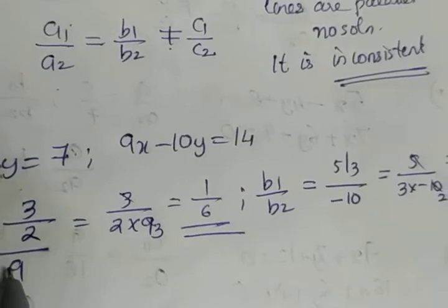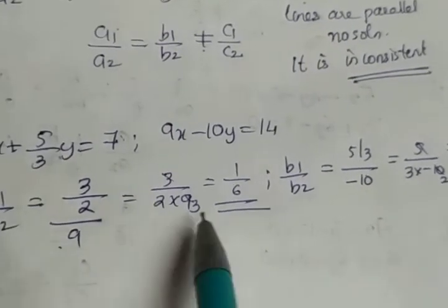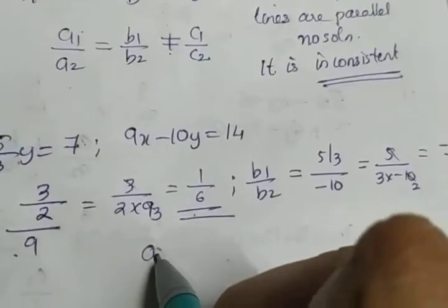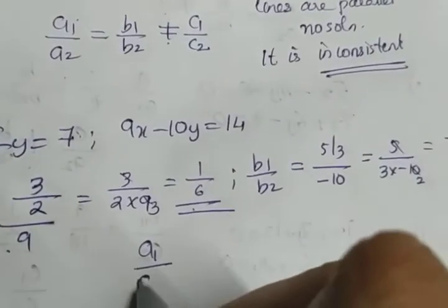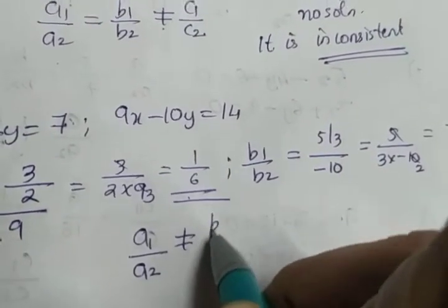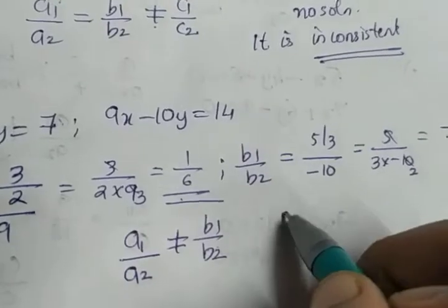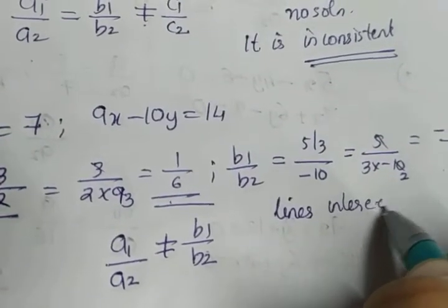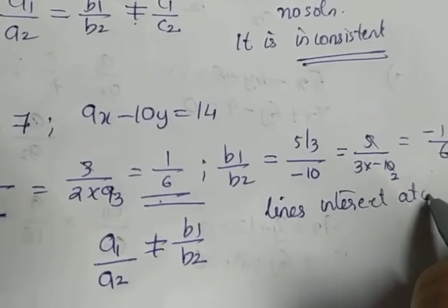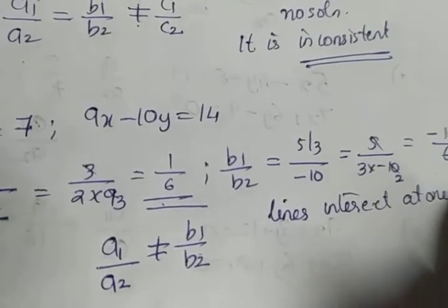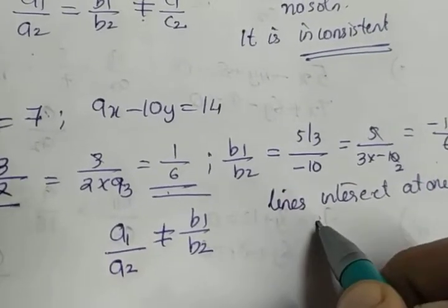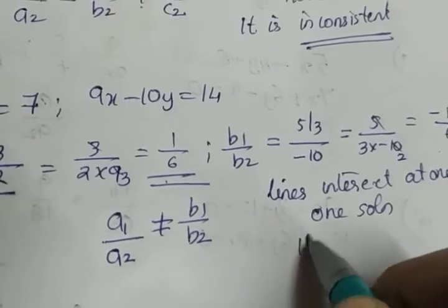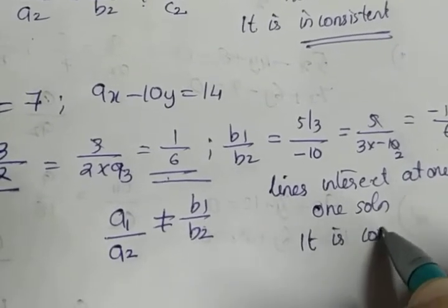So a1 by a2 is 1 by 6 and b1 by b2 is minus 1 by 6. What we can conclude is a1 by a2 is not equal to b1 by b2. Therefore the lines intersect at a point, it has one solution, and the system is consistent.